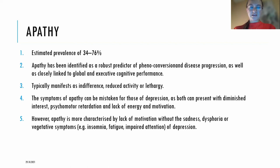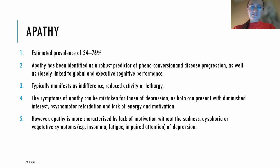When it comes to apathy, the estimated prevalence varies between 38% and 76% depending on the study. Apathy has been identified as a robust predictor of phenoconversion and disease progression, and is closely linked to global and executive cognitive performance. Apathy typically manifests as indifference and reduced activity or lethargy, and can be mistaken for depression, as both can present with diminished interest, psychomotor retardation, and lack of energy and motivation.